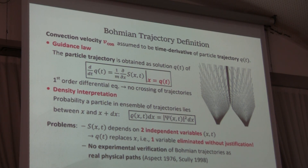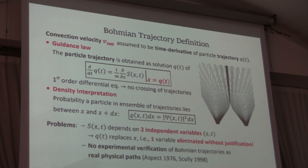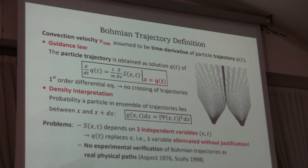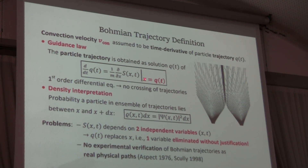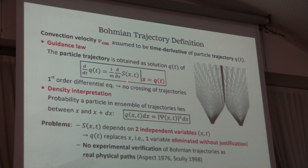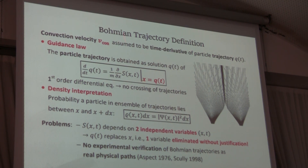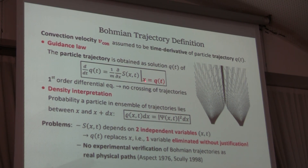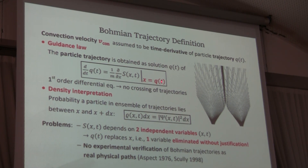You find this in all the textbooks dealing with Bohmian mechanics, but if you look closer, you will see what we have here is not a velocity like in classical mechanics — it is a velocity field that depends on two independent variables, position and time. And here they simply replace the independent variable x by a time-dependent one q of t. So you just eliminate one independent variable without any justification.